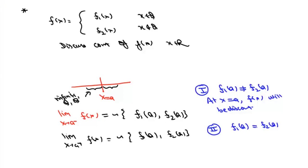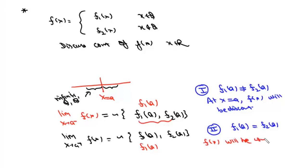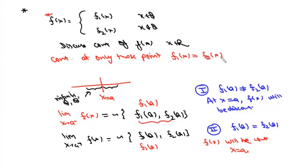If both f1(a) and f2(a) are equal, then both the oscillating values are just f1(a) and f1(a). In this case both the limits exist finitely and are also equal to the function value at that point. So f(x) will be continuous at x = a. Such functions are continuous only at those points where f1(x) = f2(x). All we need to do is equate the two definitions and solve the equation to find real values of x, say x1, x2. The function f(x) will be continuous only at these points and discontinuous at all others.